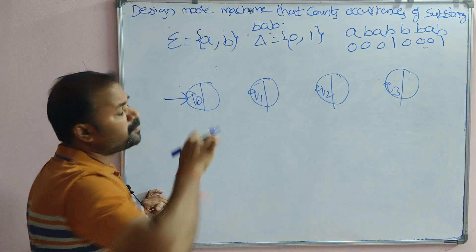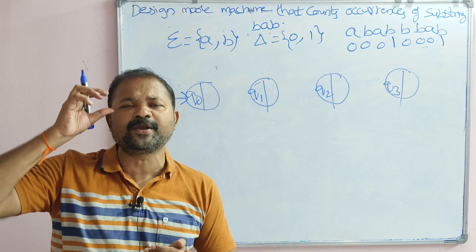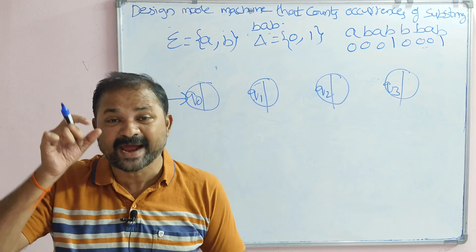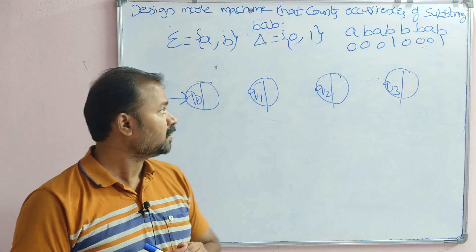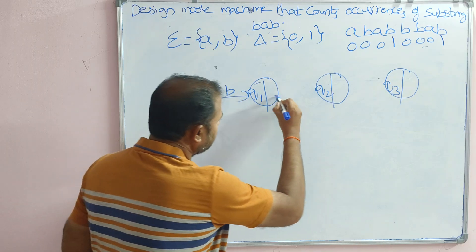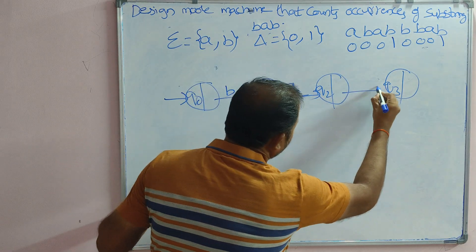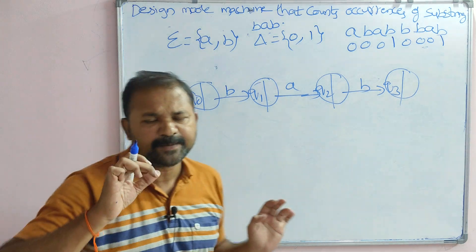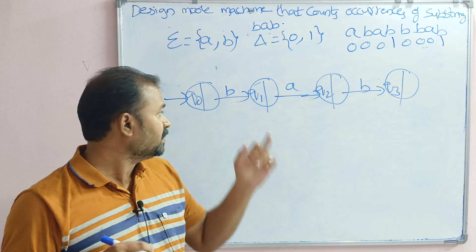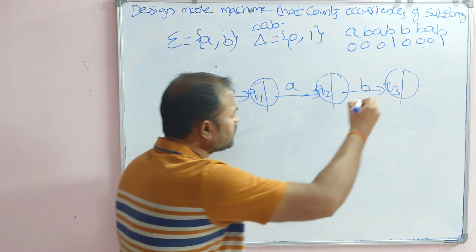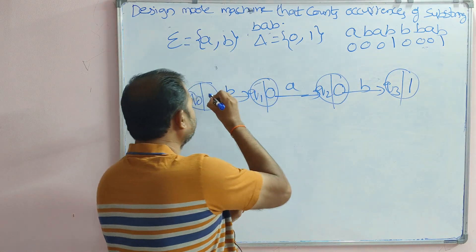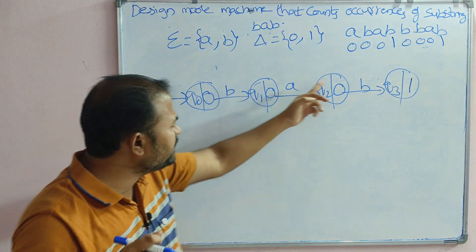This is a Moore machine. In a Moore machine, the output depends only on the present state, so we write the output inside each state. In a Moore machine we don't have any final state. If the substring BAB is present, the output is 1; otherwise the output is 0.